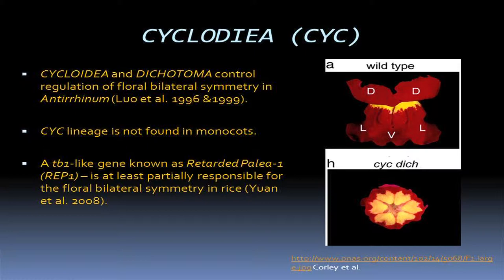Next is cycloidia. Cycloidia and dichotomy genes control floral bilateral symmetry in Antirrhinum flowers — the wild-type flower on top demonstrates bilateral symmetry, and on the bottom, when these two genes are mutated, it exhibits radial symmetry. However, we run into a problem because cycloidia is not found in monocots, which is what orchids are — they're only found in dicots. However, there is a TB1-like gene known as Zertardia paleo-1 that is at least partially responsible for bilateral symmetry in rice, and rice is a monocot like our orchids.